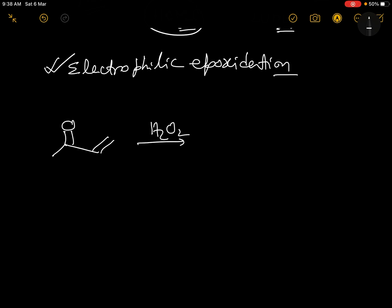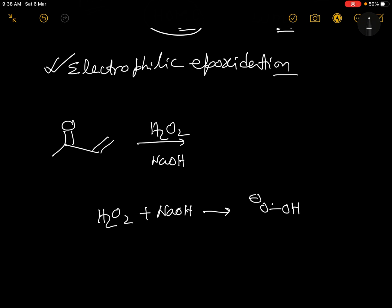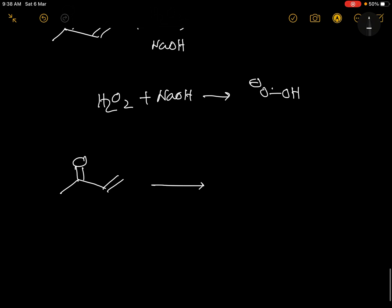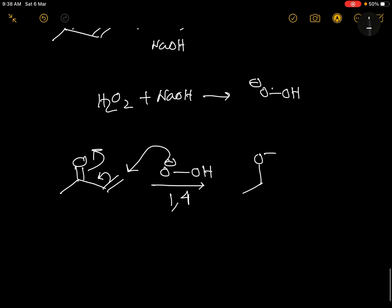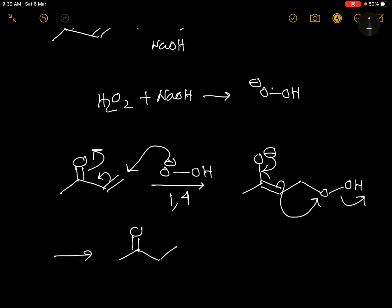For alpha-beta unsaturated carbonyl compounds, which are electron-deficient, we use H₂O₂ — but the actual reagent combination is H₂O₂ plus NaOH (or hydroxide). When you mix H₂O₂ and NaOH you generate the hydroperoxide anion (HOO⁻), which is the active reagent. This hydroperoxide performs a 1,4-addition (conjugate addition) to the enone. Then the enolate oxygen attacks, the peroxide bond breaks, and you obtain the epoxide product.